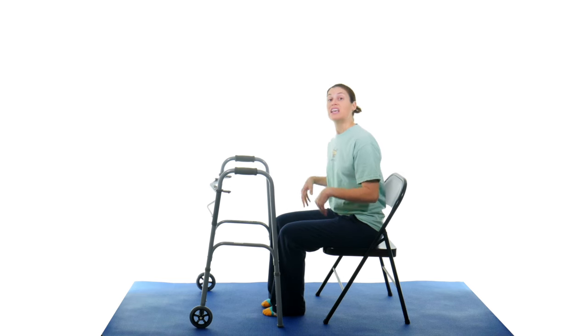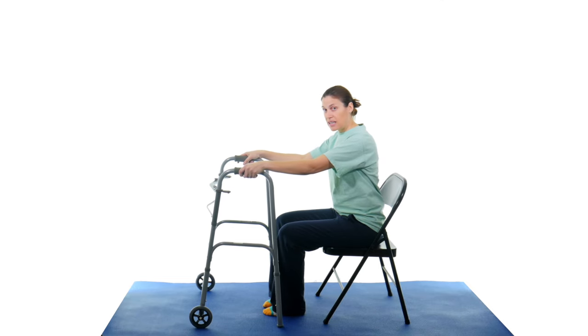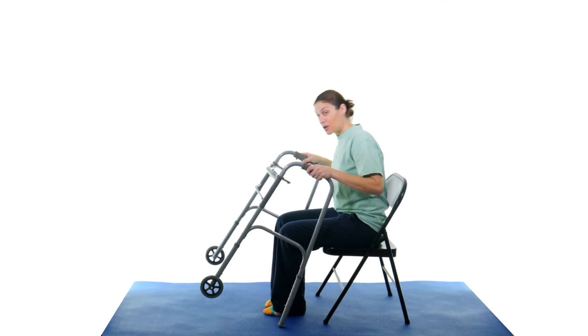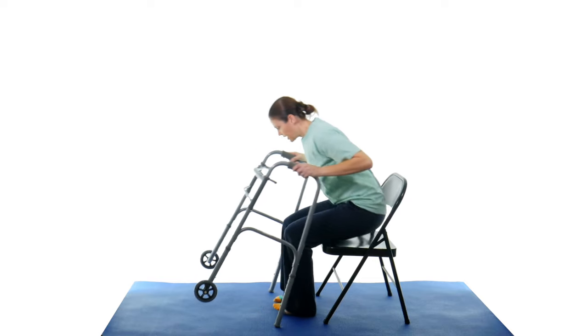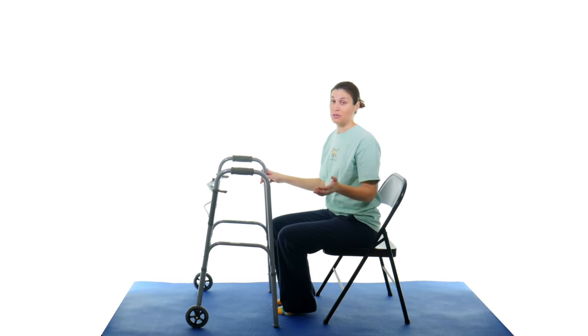So the biggest thing with getting up and getting down using a walker is to make sure you're doing it safely. A lot of times this is what I see people try and do, and it's really kind of a bad situation because it's going to make it really hard to get up. It might even make people fall. People will grab their walker like this and try and pull on their walker to get up. So they're trying to do this and then they're just going to plop right back down. So that's kind of almost impossible to do.